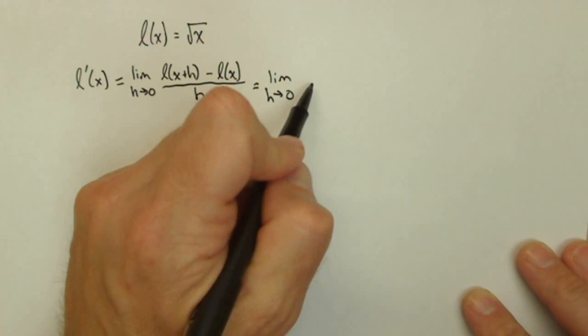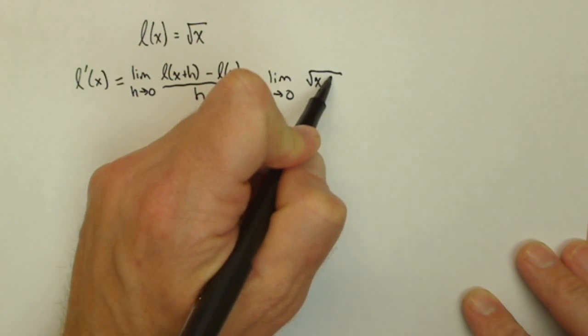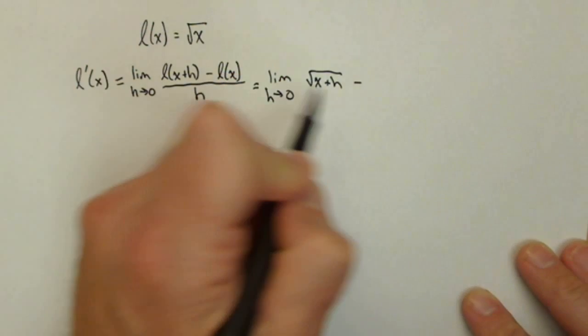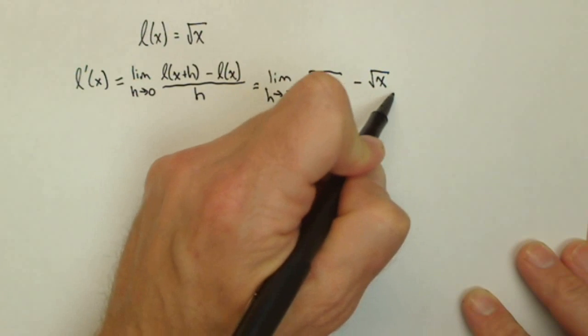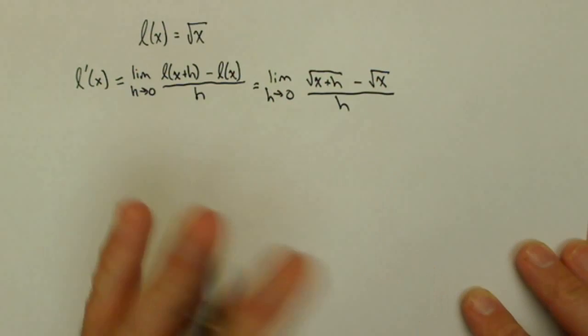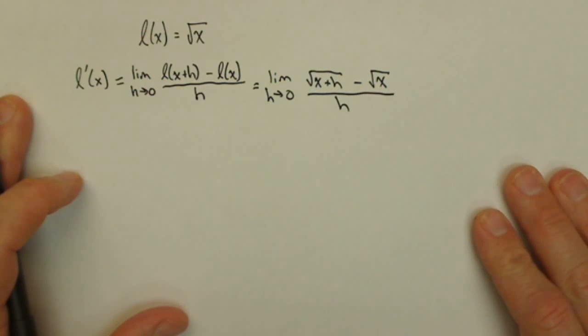So L of x plus h is going to be square root of x plus h minus L of x which is the square root of x all over h. Right now we have a zero over zero case or an indeterminate form.